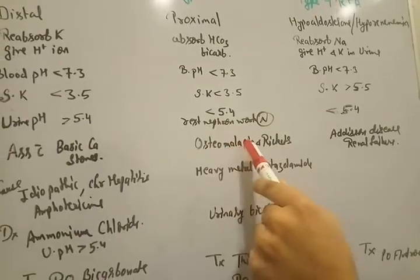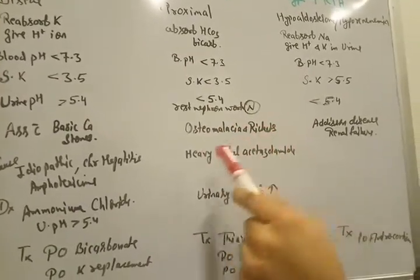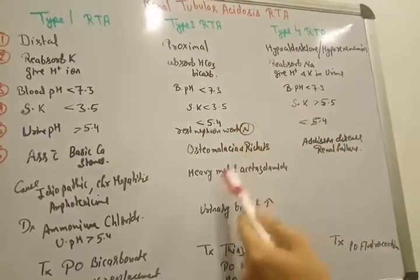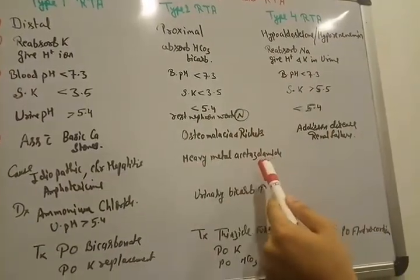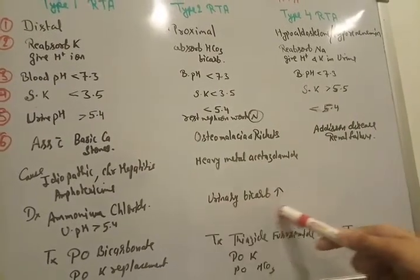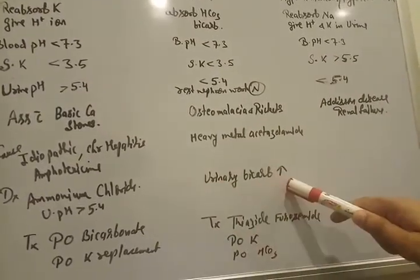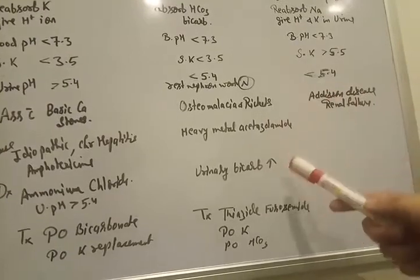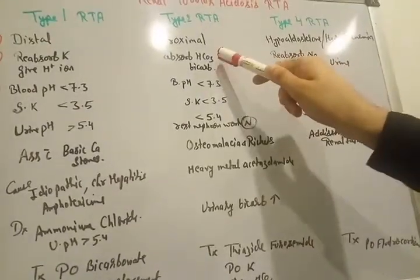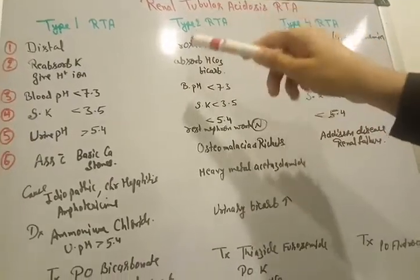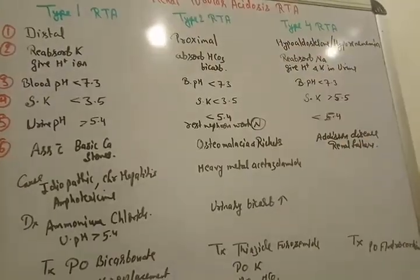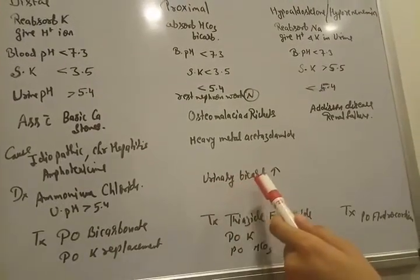And associated with osteomalacia and rickets. And causes of type II renal tubular acidosis is heavy metal. And sometimes acetazolamide. And how to diagnose? We need to check the urinary bicarb. It increases. If urinary bicarb increases. Why this increases? Because it can't absorb by the proximal tubules. It's not functioning here properly.